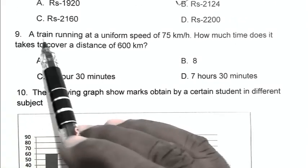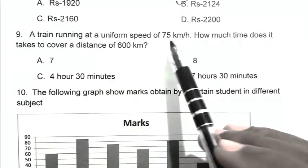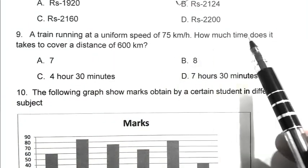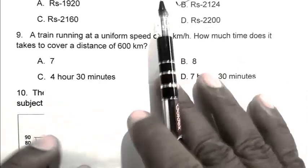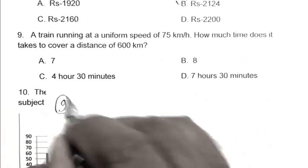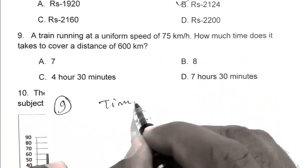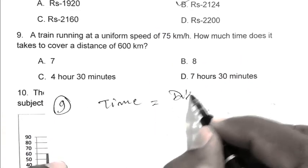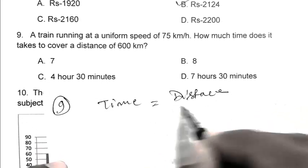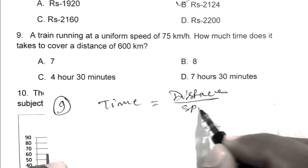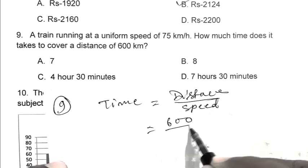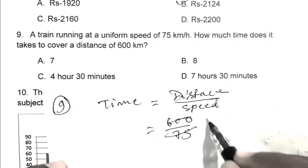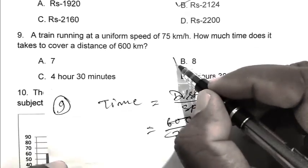Question number 9. A train running at a uniform speed of 75 km per hour, how much time does it take to cover a distance of 600 km? Time equals distance upon speed. Distance 600 upon 75, that is 8 hours. So B is the right answer.